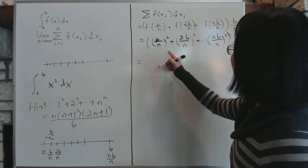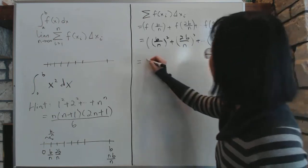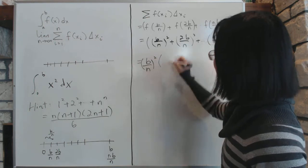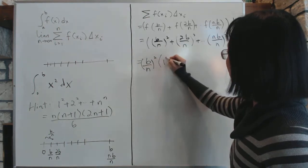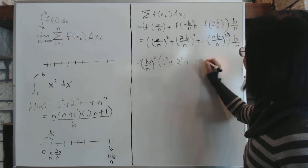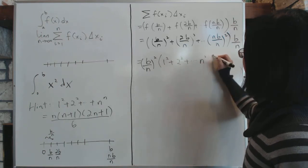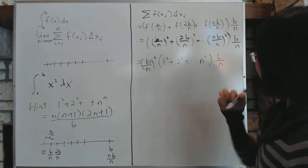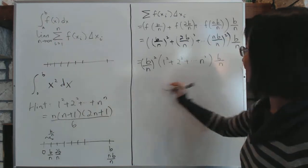Now, let's see. We'll take out a common factor, which is (b over n) squared, and what we have left in there then is 1 squared plus 2 squared plus all the way up to n squared times b over n. Okay. Now we see where this comes in very handy.